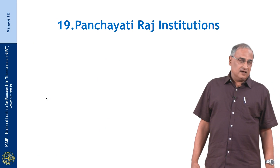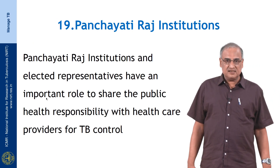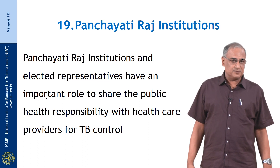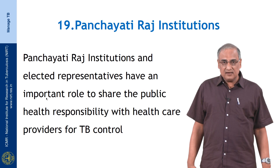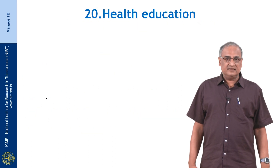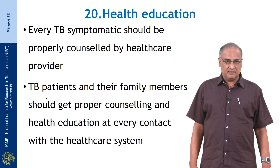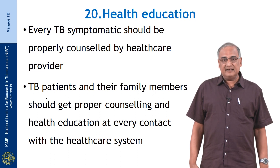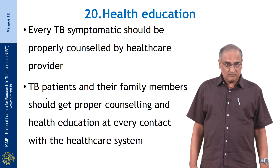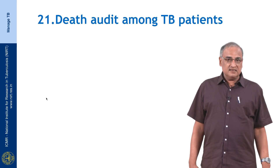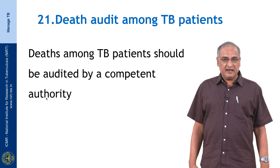Standard 19 talks about panchayati raj institutions and elected representatives as having an important role to share in the public health responsibility for TB control. Standard 20 deals with health education, where every TB symptomatic should be properly counselled by healthcare providers. Standard 21 is about the death audit among TB patients, and this death audit should be done by a competent authority.